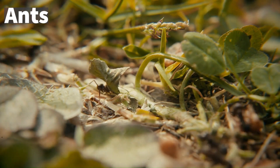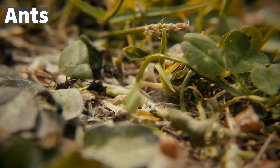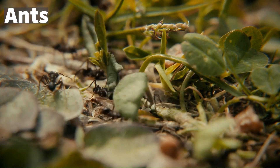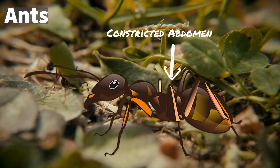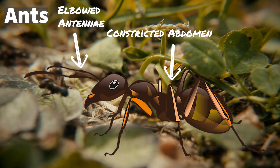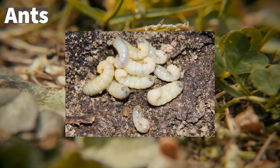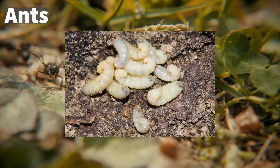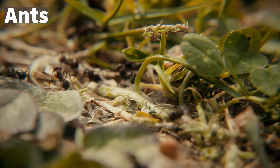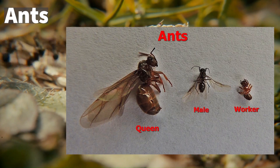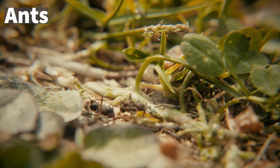Ants are hymenopterans adapted exclusively for eusociality, with all ant species being eusocial. Ants can be identified by their constricted abdomen, elbowed antennae, and prominent mandibles. Ant larvae are incredibly physically reduced and are cared for by older ants. Like social bees, ants have a highly developed social structure and pheromone-based communication systems.